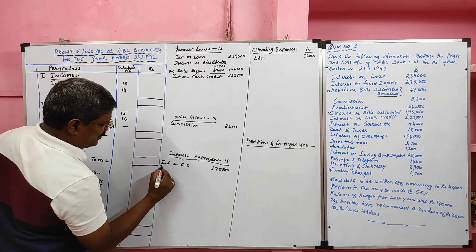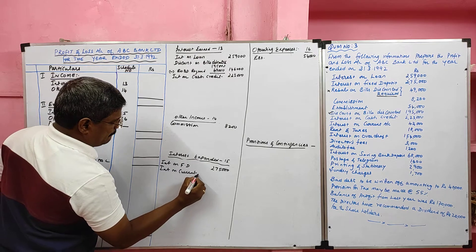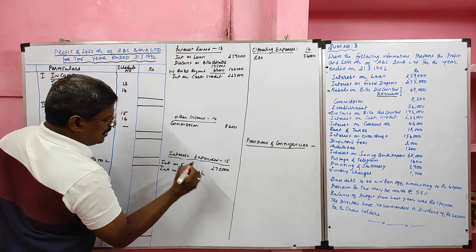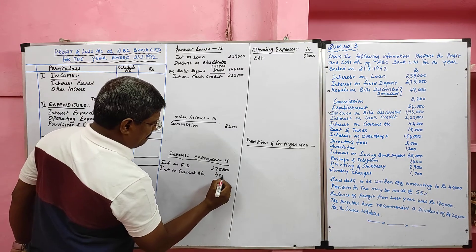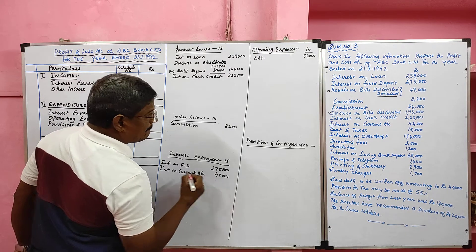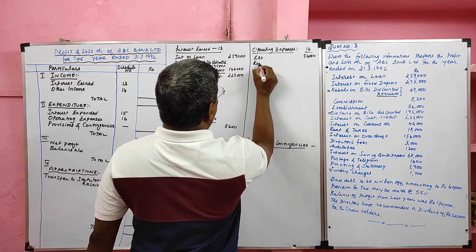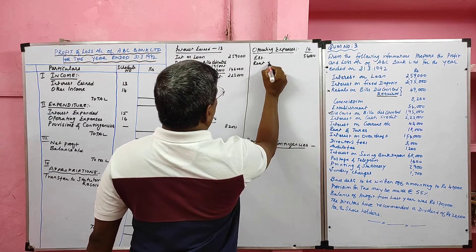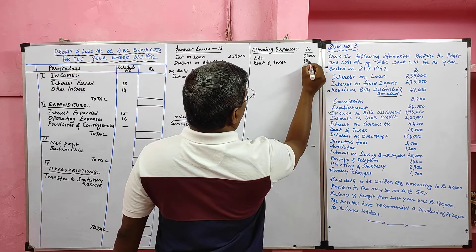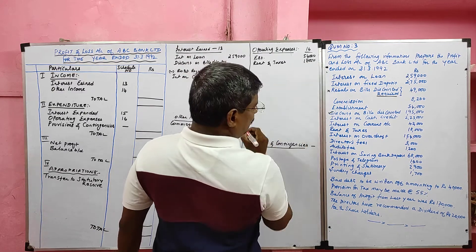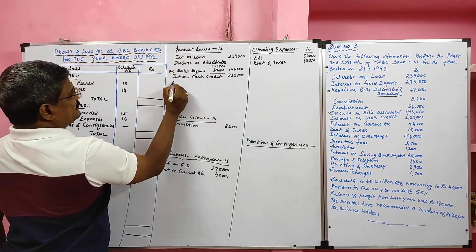Interest on current account is a payment of interest, so it is included in interest expended — interest on current account value rupees 42,000. Rent and taxes is an operating expense with a value of rupees 18,000.